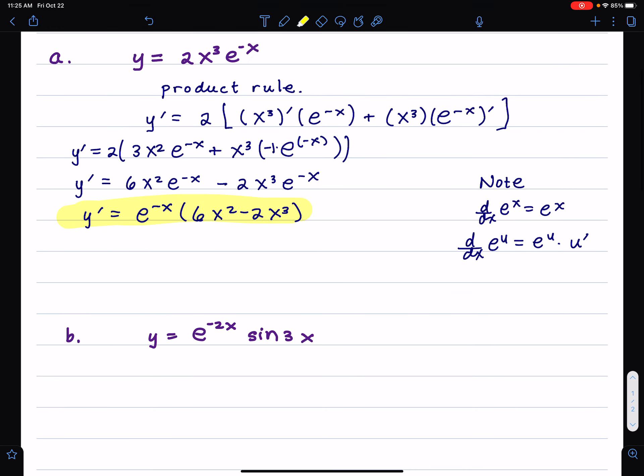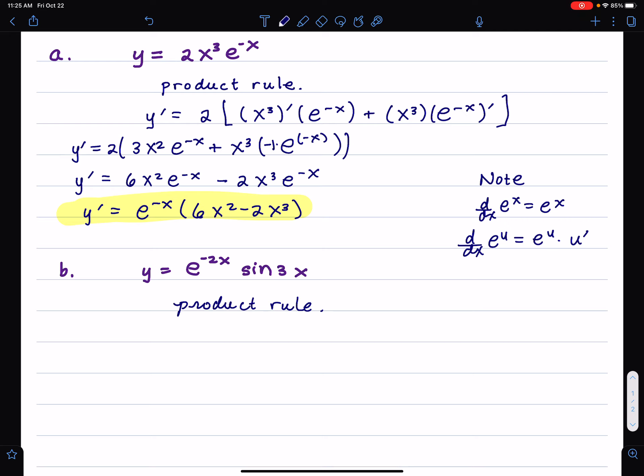Let's look at the next problem. Again, we're going to do the product rule, because we have two different functions which are multiplied together. So y prime equals the derivative of the first factor, leave the second factor alone, plus first factor leave alone, derivative of the second factor. In both cases, we need to use the chain rule.